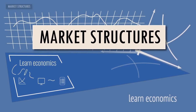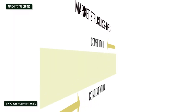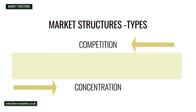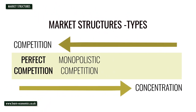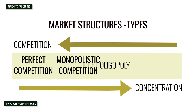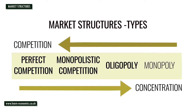Market structures. Economists identify several market structures including perfect competition, monopolistic competition, duopoly, oligopoly and monopoly.